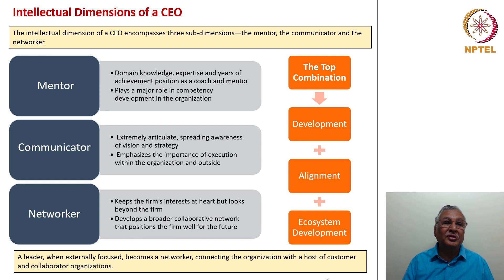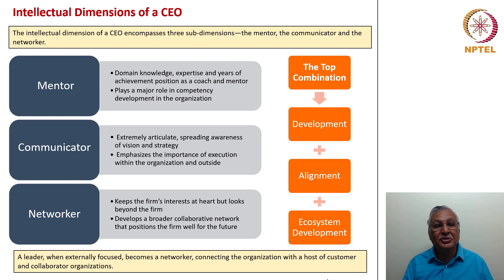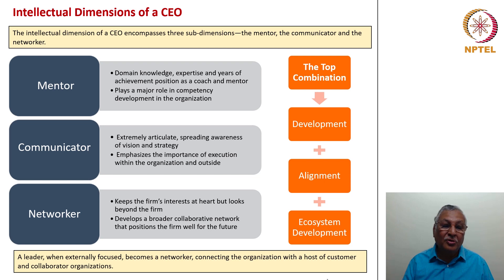Next, the third dimension of intellect has three sub-dimensions: mentoring ability, communicating ability and networking ability. Under mentorship, domain knowledge, expertise and years of achievement position the leader as a coach and mentor — these get transferred to the leadership team and other members of the organization. A mentoring CEO plays a major role in competency development. On the communicator sub-dimension, the CEO tends to be extremely articulate, spreading awareness of vision and strategy and emphasizing the importance of execution. In the networking role, the CEO looks beyond the firm, developing a broader collaborative network that positions the firm well for the future. The top combination is a blend of development, alignment and ecosystem development.